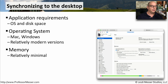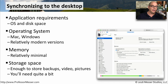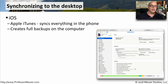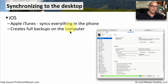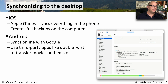The memory requirements for this are relatively minimal, but you will need a lot of storage space so that you can take all of the media and messages from your mobile device and store them on your local computer. If you're using an iOS device, you can synchronize to the desktop using Apple iTunes, either in Windows or on Mac OS. This will synchronize everything in your mobile device and also create full backups on your computer. If you lose your phone and get a new phone, you can restore completely using this iTunes backup.